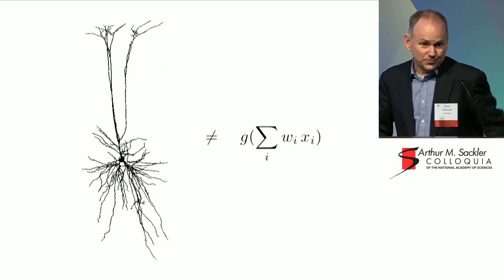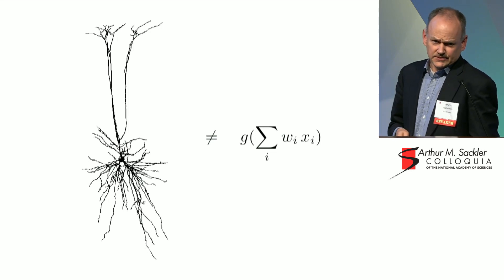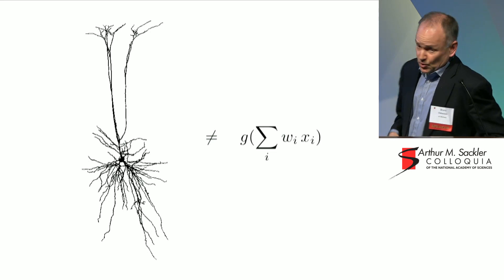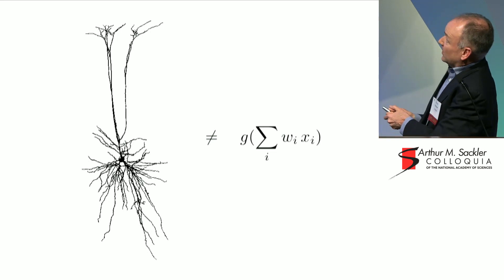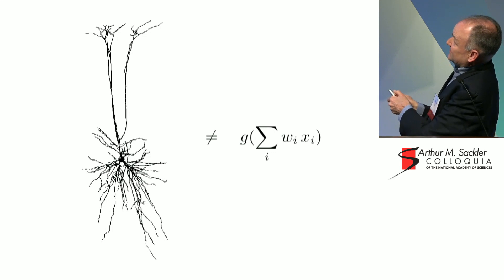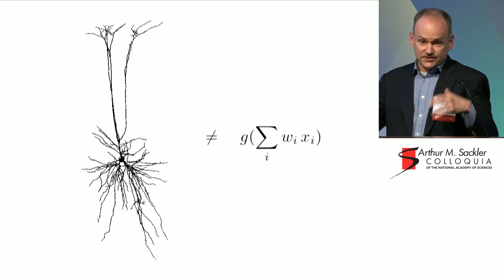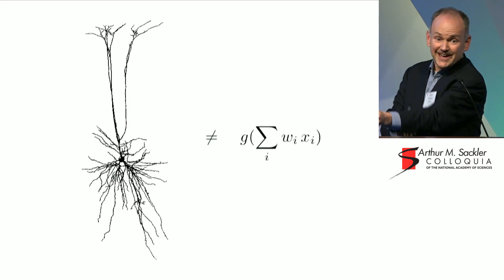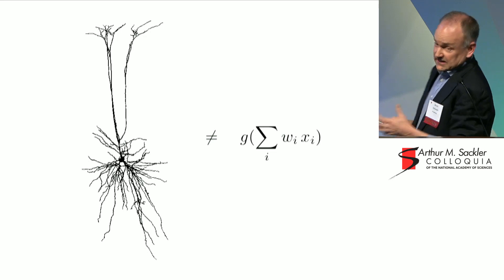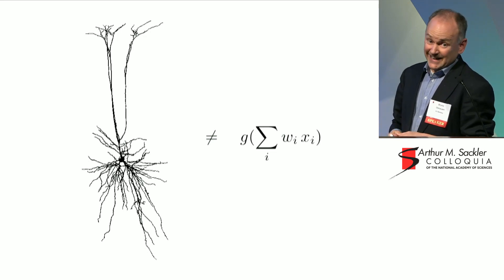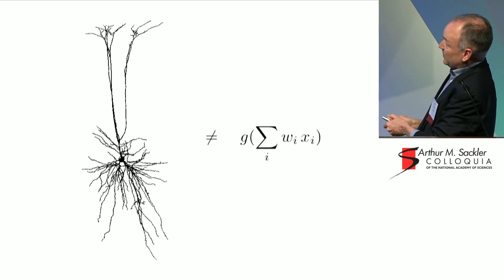So what do we know from biology that could be incorporated in these networks? What does a neuron in the brain really do? Well, if there's anything we know from biophysics, it does not simply take the sum of all the currents coming in via the dendrite and apply a threshold at the soma. In fact, if a neuron wanted to become a linear device like that, it would have to try hard to do it — to remove all the nonlinearities we know exist in the dendrites.